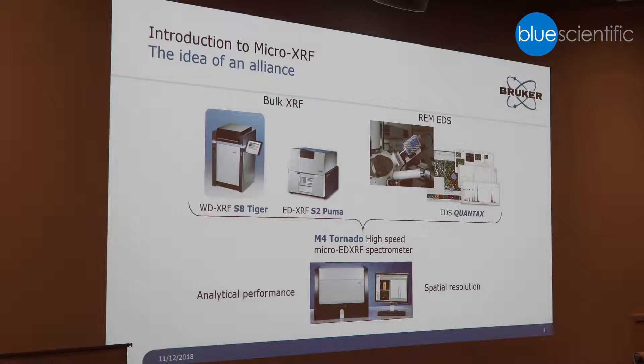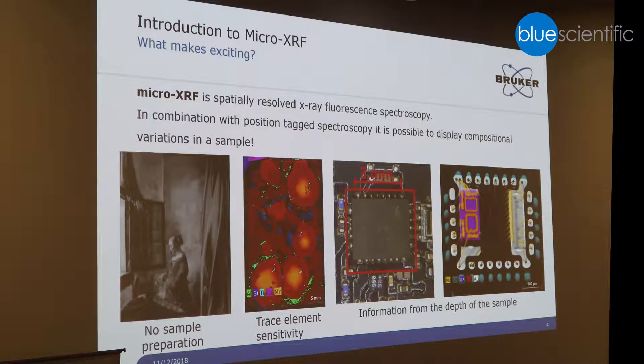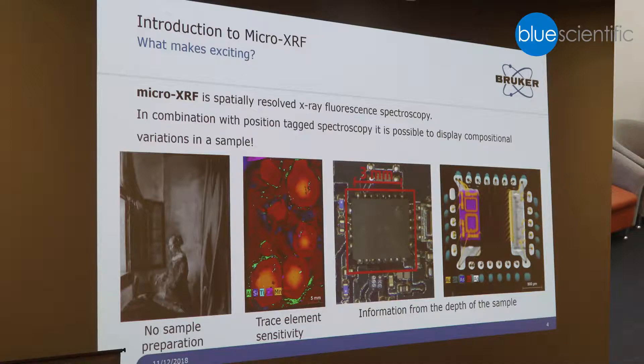You combine the analytical performance with the spatial resolution. Micro XRF is also a non-destructive method, and that's a key feature if you want to analyze very valuable objects, like shown here. This is a Van Maier painting — the value of this painting is 120 million. Of course, you don't want to use any destructive method, so no sample preparation is required.